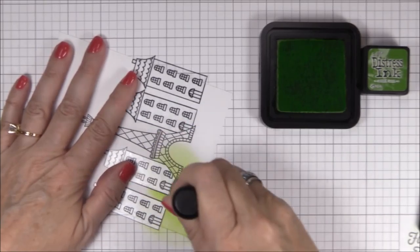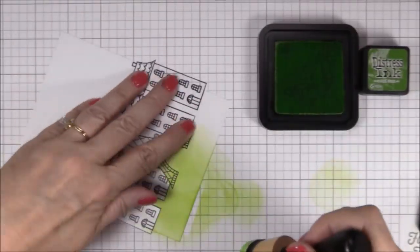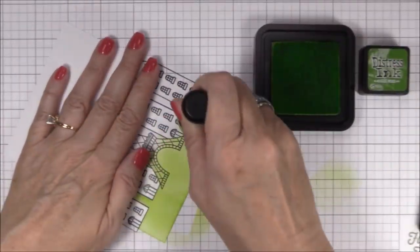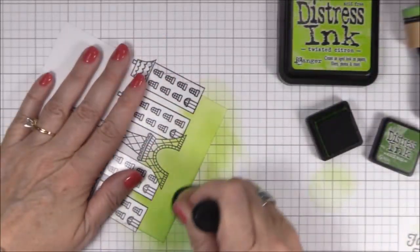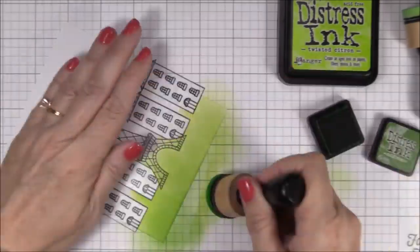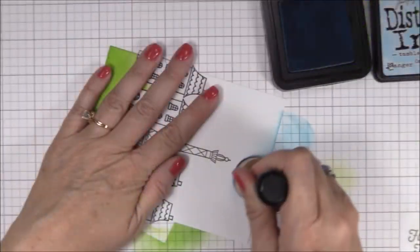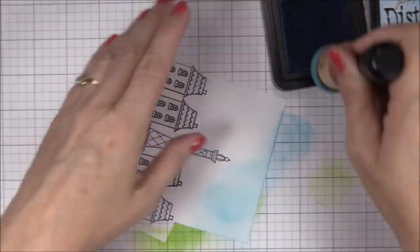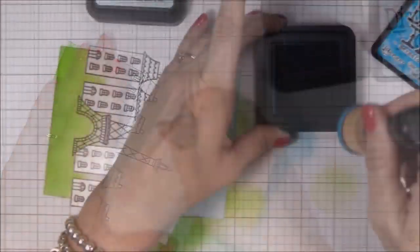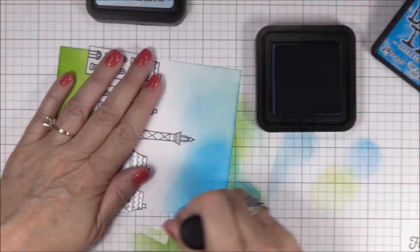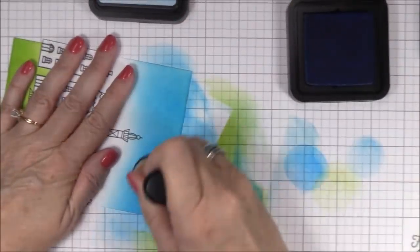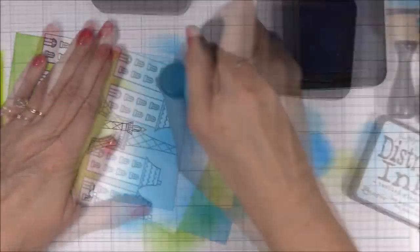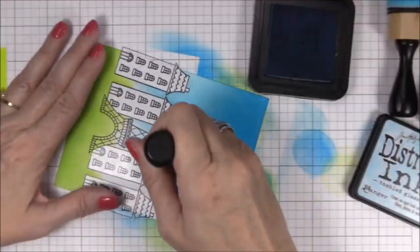Now for some ink blending. I'm not going to show you every detail of my ink blending process, because you've seen it a million times before, and I really want to spend the bulk of my time showing you how to create the circuit for the lights. I started with a light blend of twisted citron, followed by a light blend of mowed lawn for the grassy area. Then I blended some tumble glass, mermaid lagoon, and salty ocean to create my night sky. I finished it off with more tumble glass just to blend all the colors together.